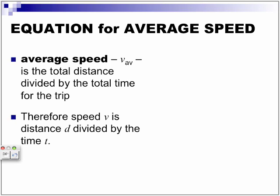Equation for average speed. The average speed, we are going to use the letters v_av. So, we use v for speed, and we use the letters av to represent the average speed. So, average speed is the total distance divided by the total time for the trip. Therefore, the speed v is distance d divided by time t. Here is the equation: v_av is equal to delta d over delta t.